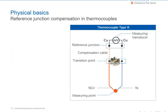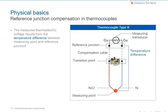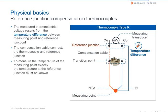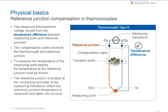With thermocouples, the temperature difference between the measuring point and the reference junction is deduced from the measured thermoelectric voltage between the two thermo-legs. The thermoelectric voltage measured at the reference junction is directly proportional to the temperature difference between the measuring point and reference junction. The reference junction is where the thermo-wires or compensation cables are connected to the copper lines or the transducer. For the temperature of the measuring point to be determined accurately, the temperature of the reference junction must be known. The transducer measures the reference junction temperature with a reference resistor and compensates the influence of temperature at the reference junction.